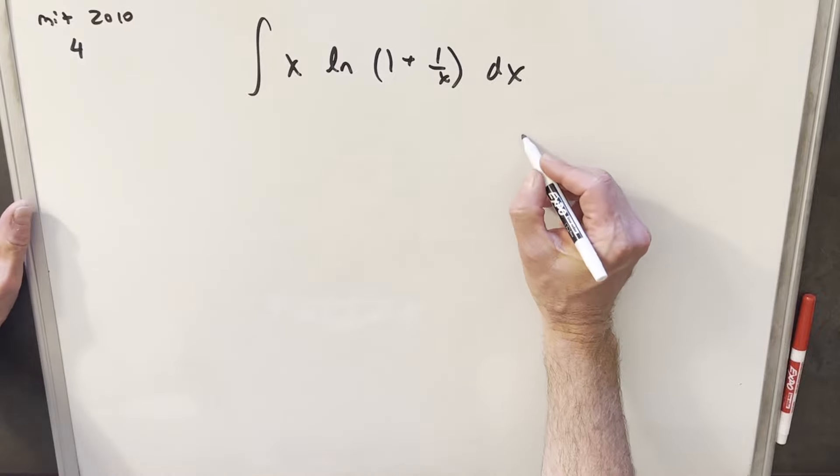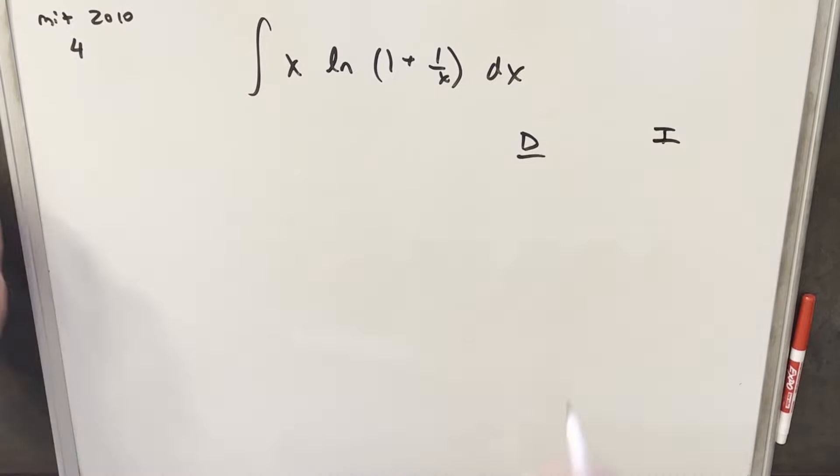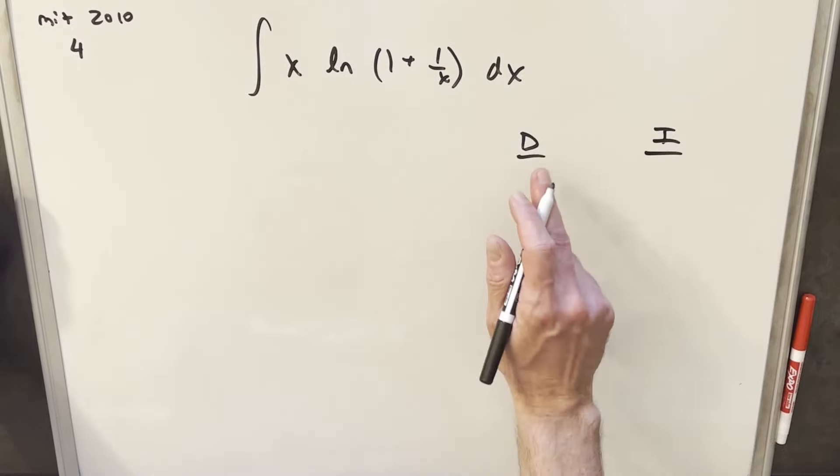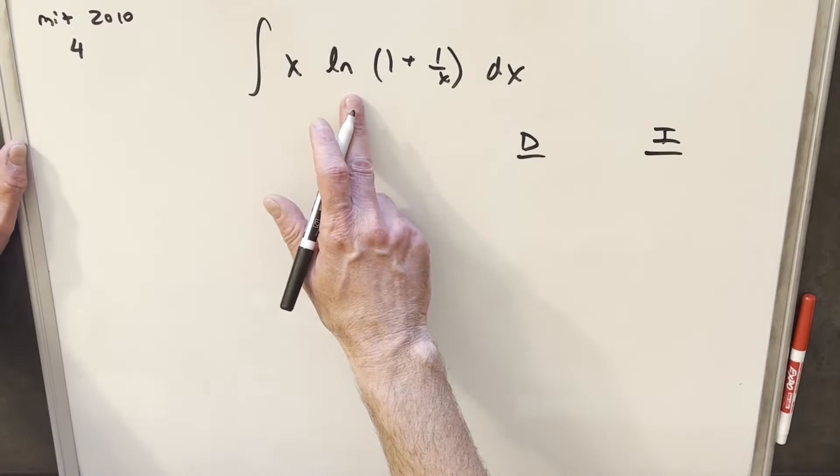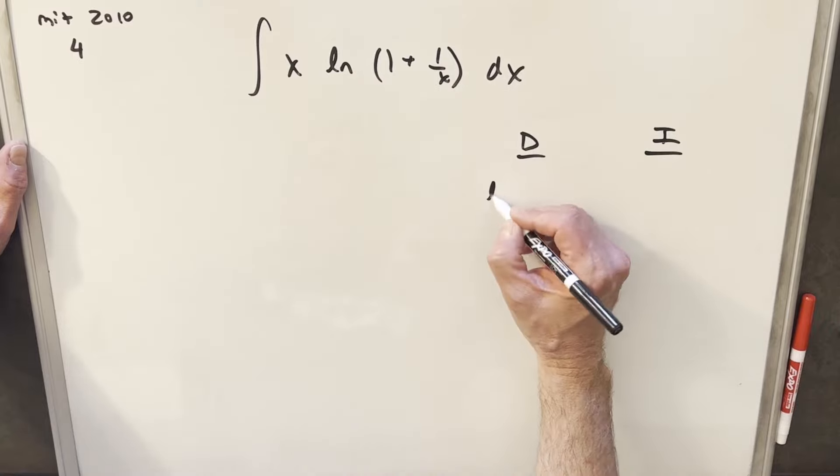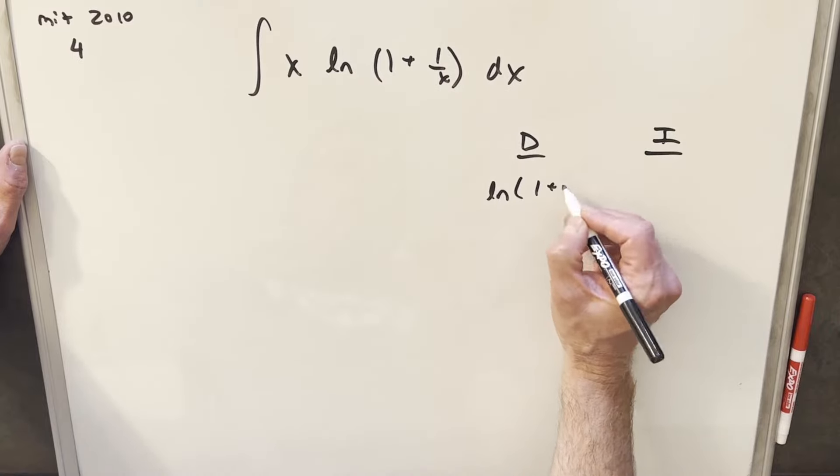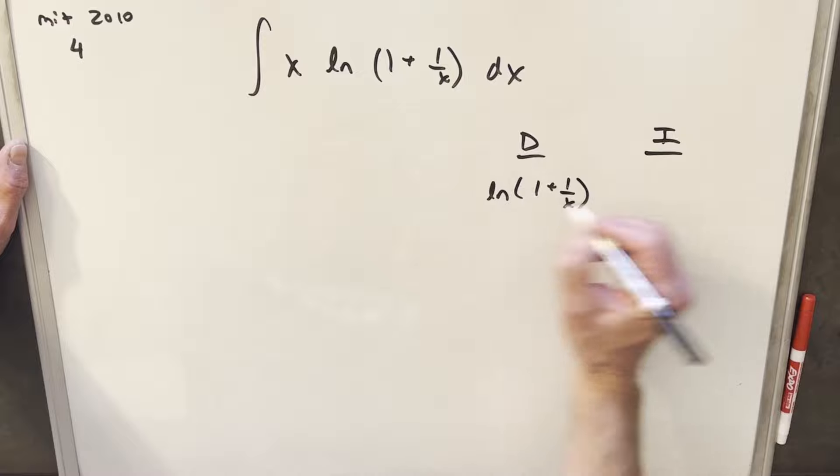I'm going to use the DI method or tabular integration. In doing this, we have one part we're going to differentiate, one part we're going to integrate. It's going to work well because we usually want to differentiate natural log. So we'll differentiate this piece and we'll integrate the x.